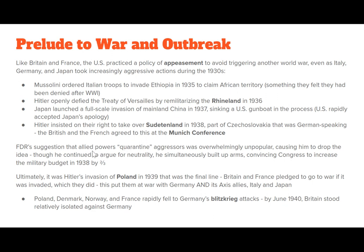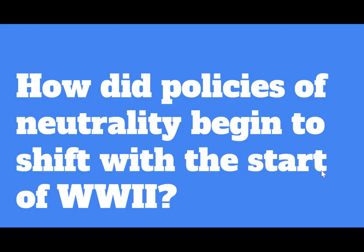FDR suggested the Allied powers quarantine aggressors by not offering economic aid or trading with them, but this was overwhelmingly unpopular and he dropped the idea. He continued to argue for neutrality while simultaneously building up arms, convincing Congress to increase the military budget by two-thirds in 1938. Ultimately, Hitler's invasion of Poland in 1939 was the final line for Europeans. Britain and France pledged to go to war if Poland was invaded — it was, and they did, putting them at war with Germany and its Axis allies Italy and Japan. Poland, Denmark, Norway, and France fell rapidly to Germany's blitzkrieg attacks, and by June 1940, Britain stood isolated against Germany.